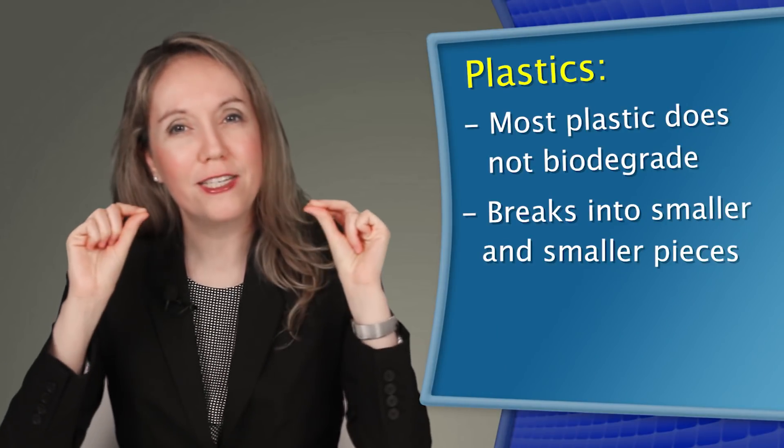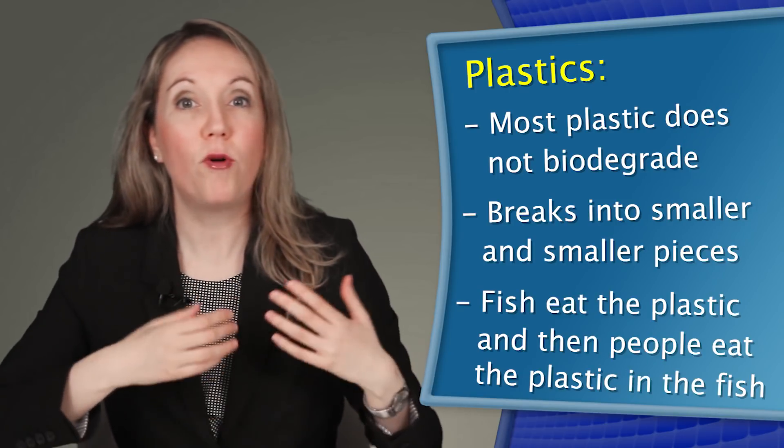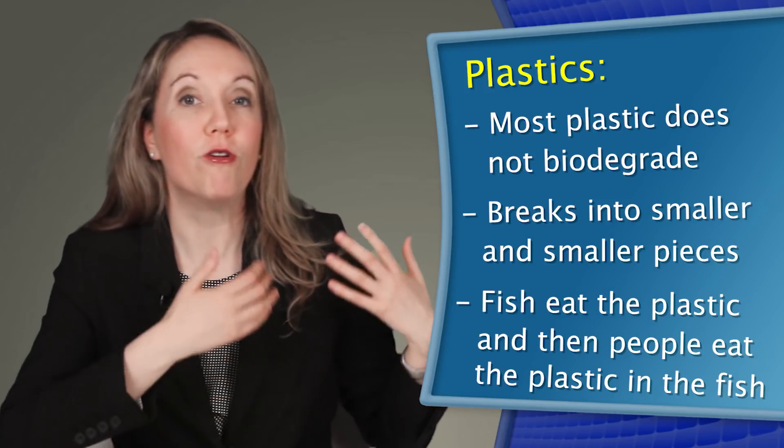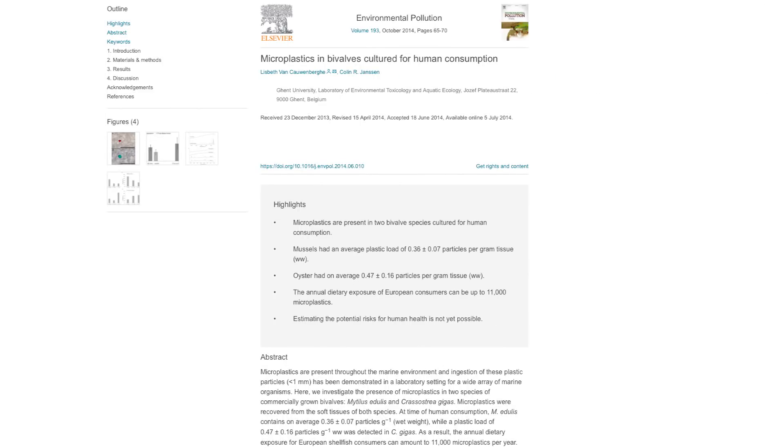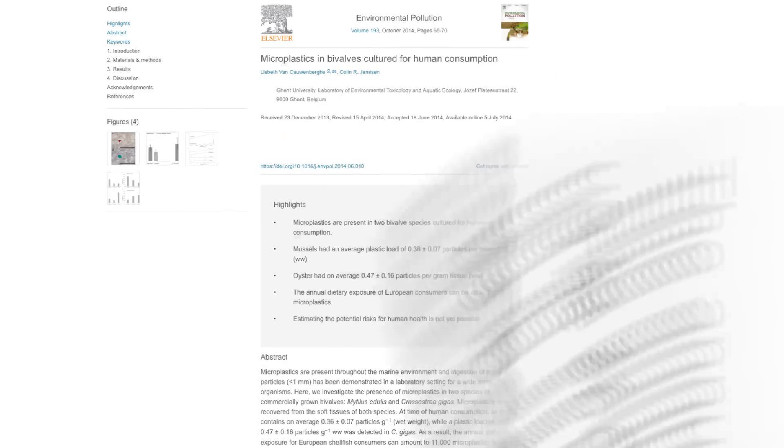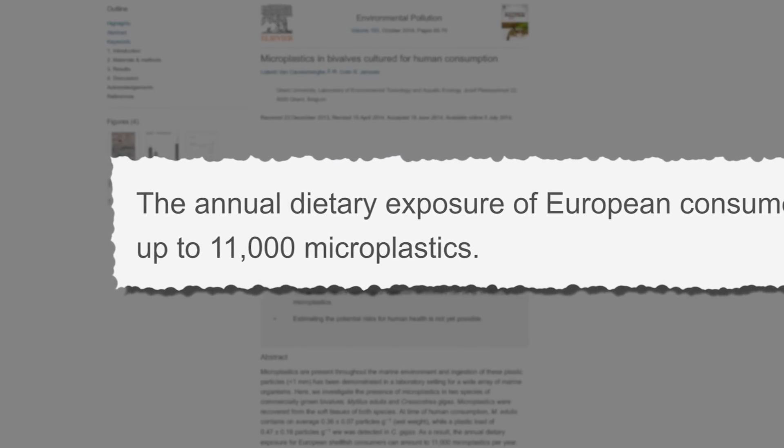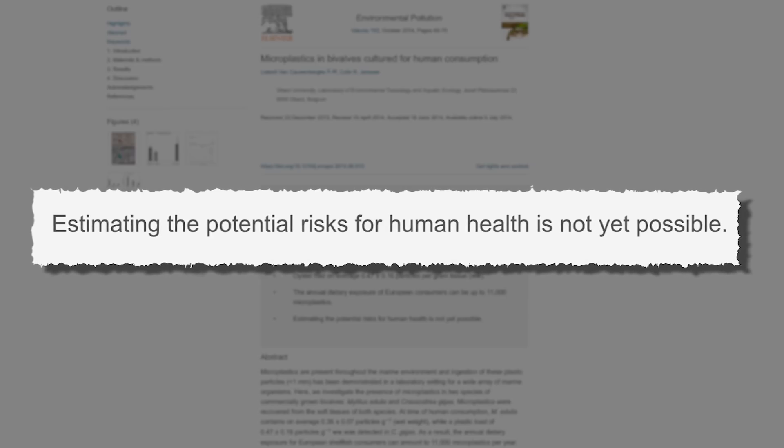It just breaks into smaller and smaller pieces which the fish eat, and then people end up eating that plastic too when they eat fish, even though we don't taste it or see it or smell it. According to a recent study from the University of Belgium, seafood-loving Europeans are estimated to be eating about 11,000 tiny pieces of plastic per person per year. The scary thing is, we don't really know how eating all this plastic will affect human health. We are just now starting to study it.